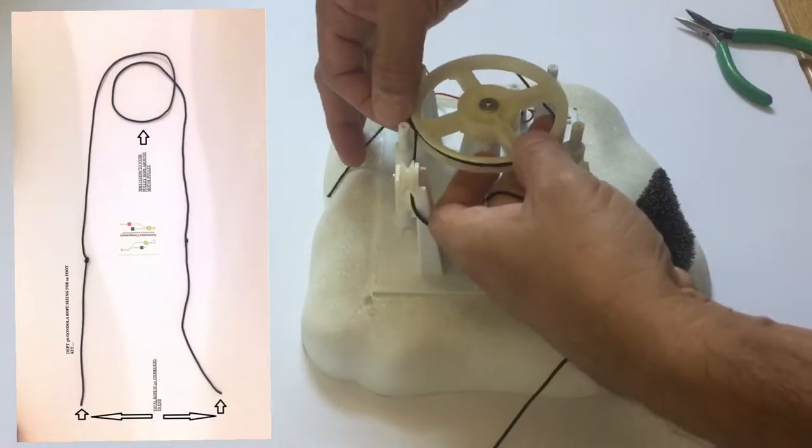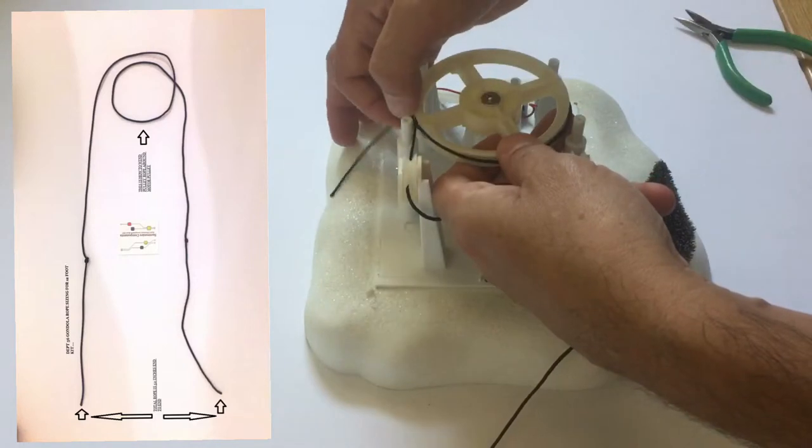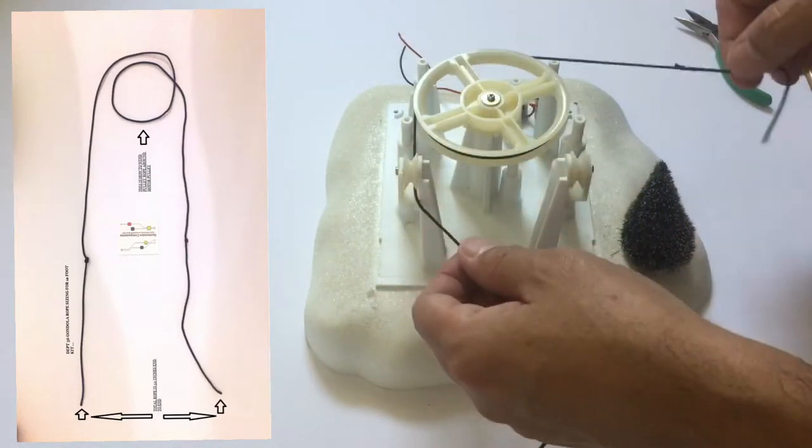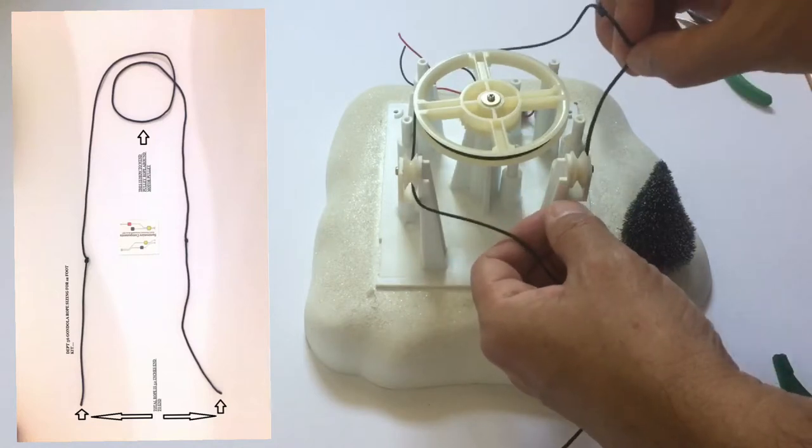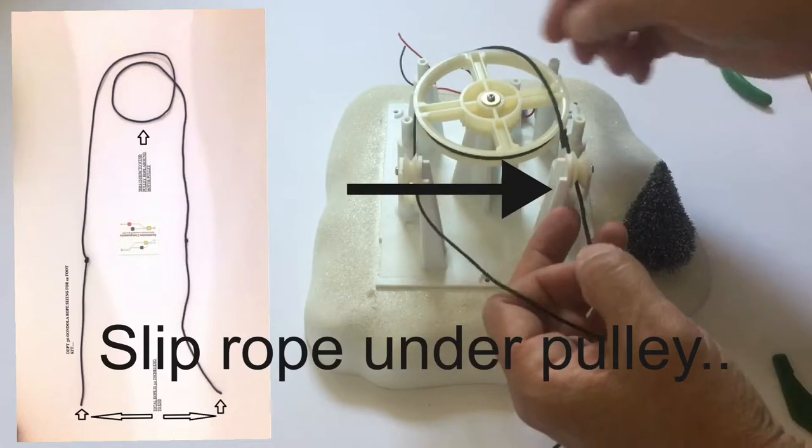Sometimes it will take a couple of tries because the rope has a tendency to slip off the pulley. But be patient. Once you get it around, slip it through the other side, under the pulley.